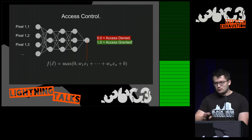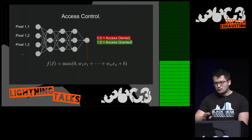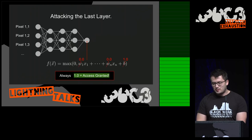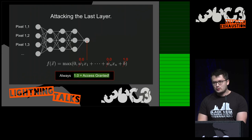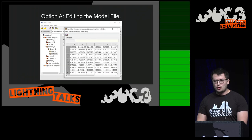So how can we modify this so we always get 'access granted'? It's quite obvious: simply replace all the weights with zero and set the bias to one. No matter what iris you feed the network, it will always return 'access granted.' How do you do this in real life? The neural network is usually stored in a model file, which you can simply edit. Is this realistic? Yes — most blue teams don't know how to secure these model files because they're neither code, database, nor configuration files.